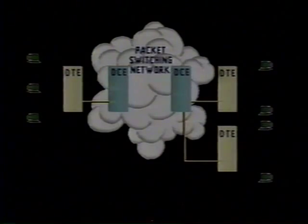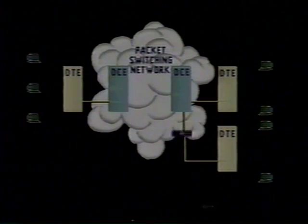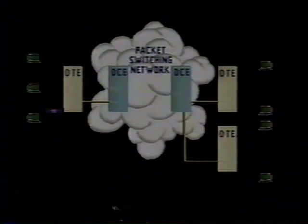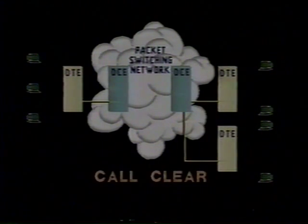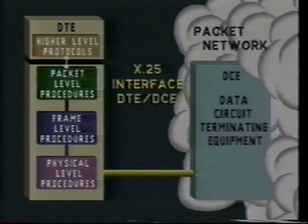The packet switching network then dynamically routes your information to its destination through the switched virtual circuit temporarily established for this particular connection. When the information exchange is completed, the packet level hangs up the phone by sending a call clear packet. The temporary switched virtual circuit is now clear. The distinguishing logical channel number returns to the network pool for another assignment, and both ends of the switched virtual circuit are placed in a ready state to be available for another virtual call.